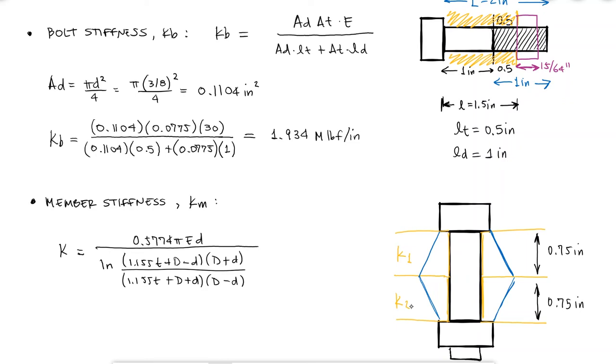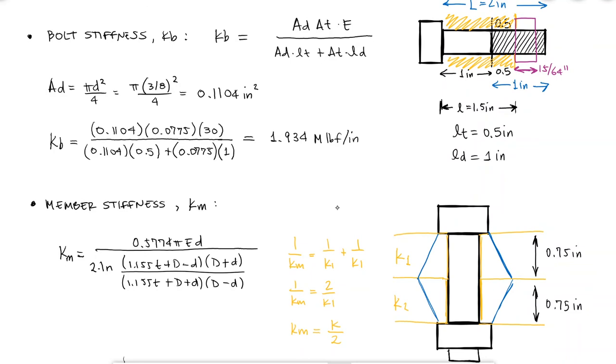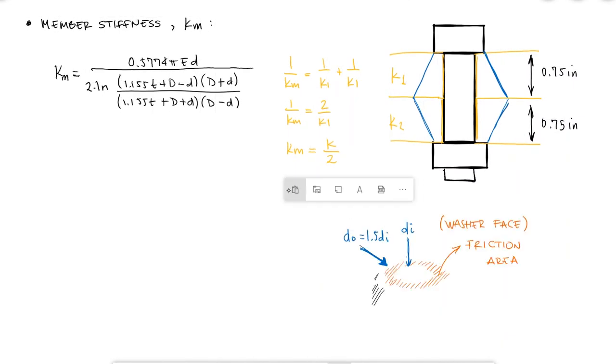This means that the member stiffness, which is found by adding them in series, would be equal to half of what the expression gives us. Additionally, since we're not using washers, capital D would be the outer diameter of the face that makes contact between the nut and the members, or the bolt head and the members.